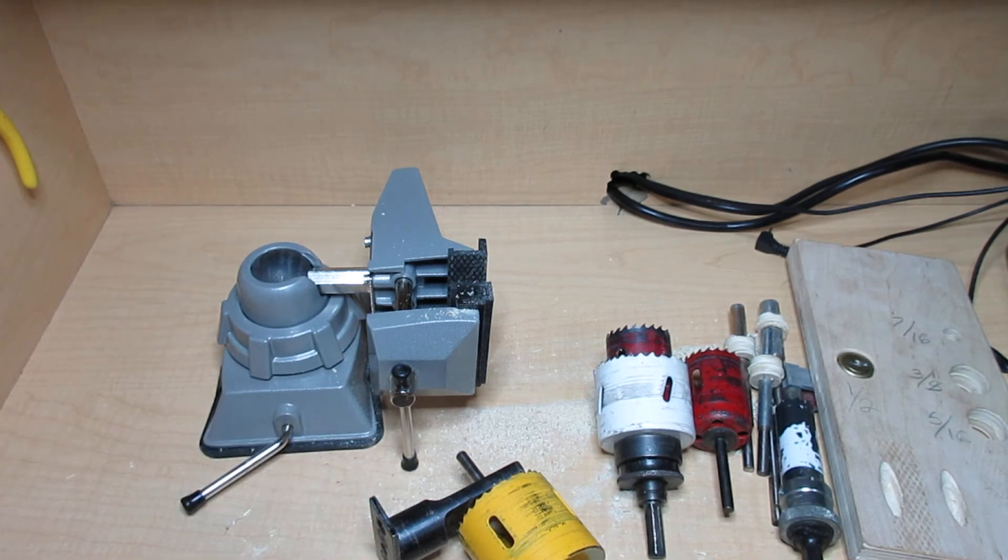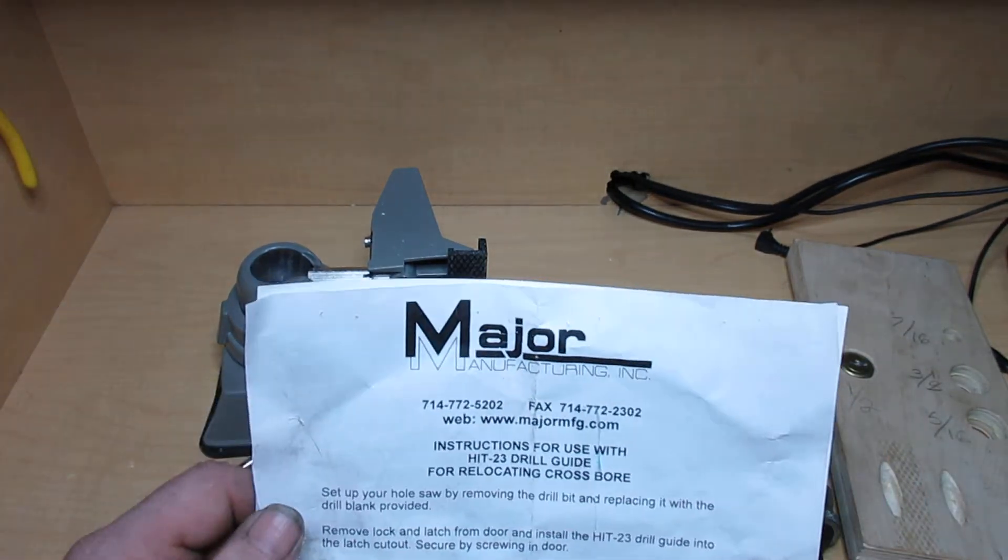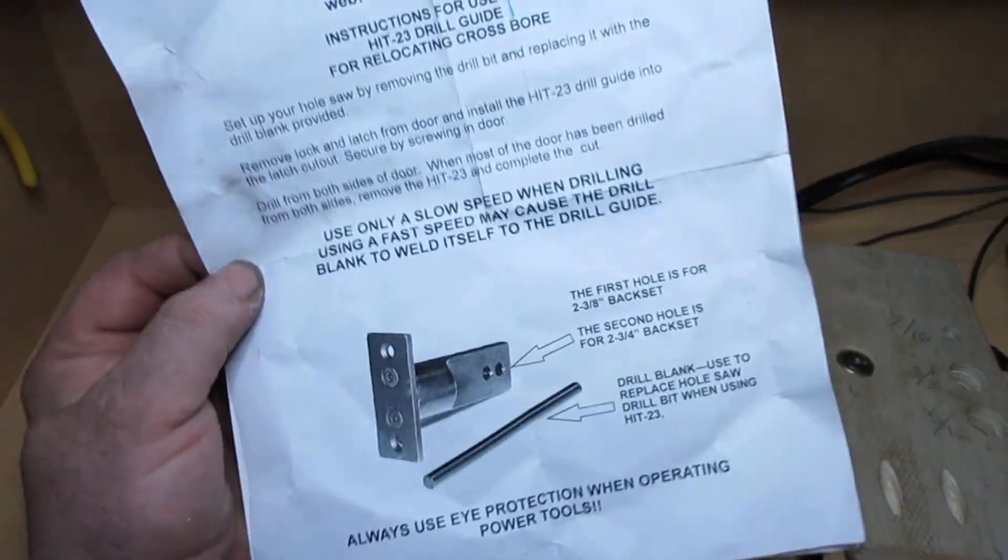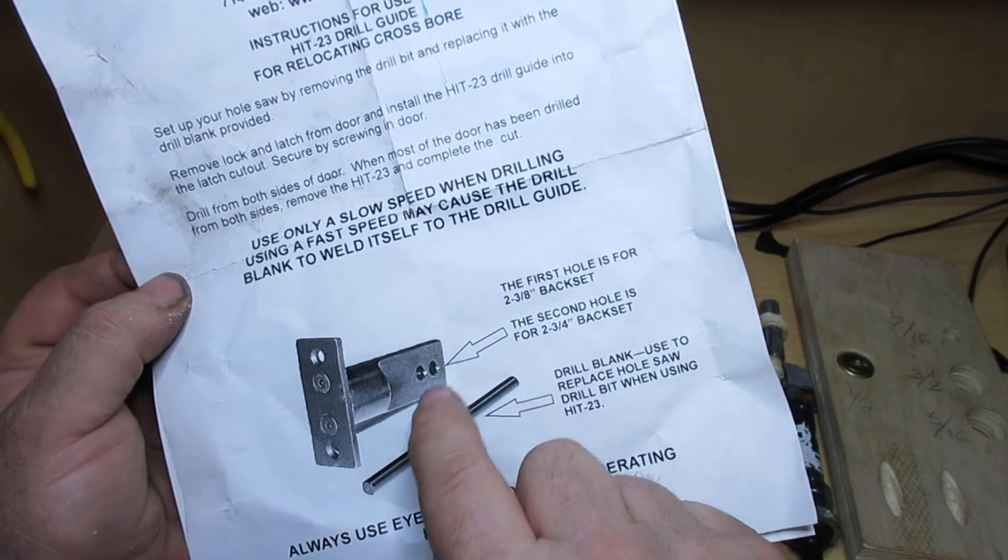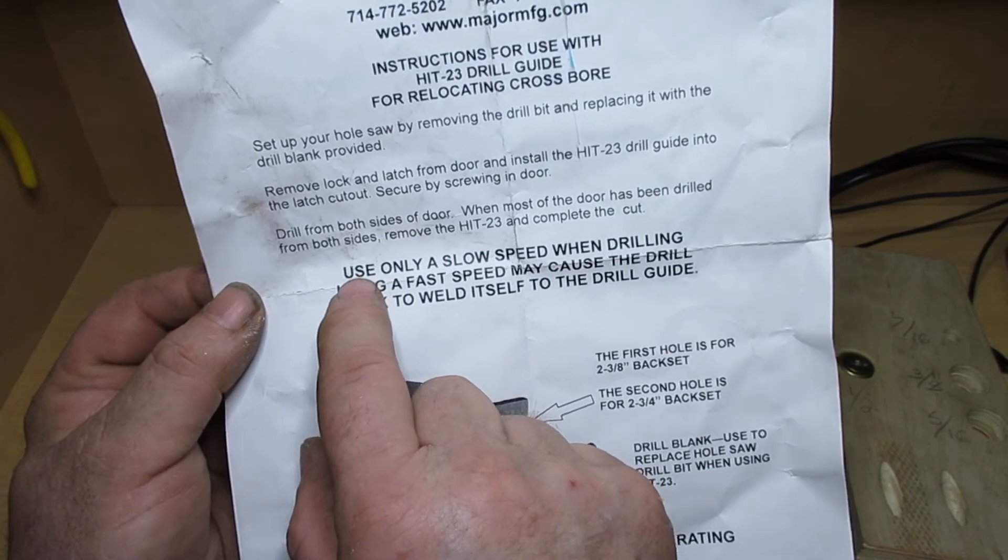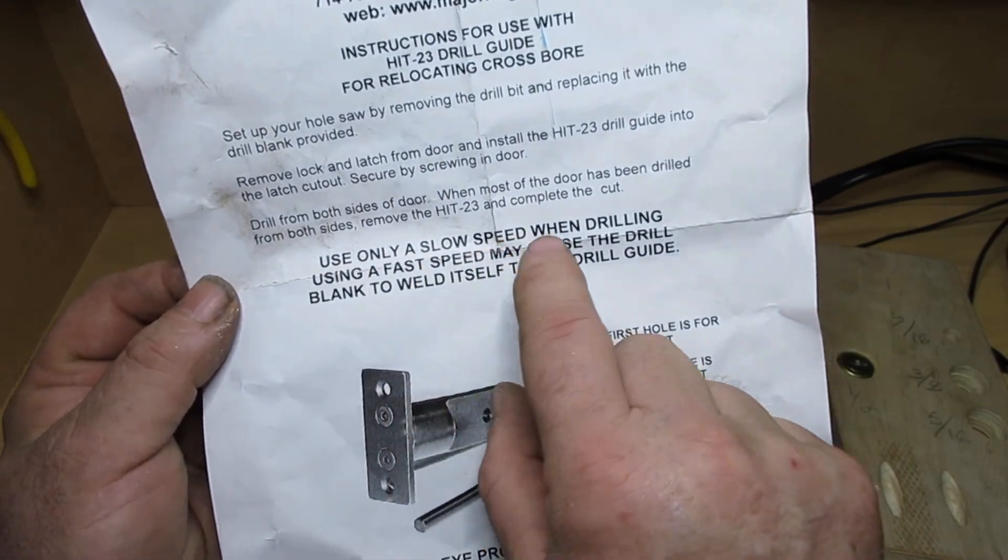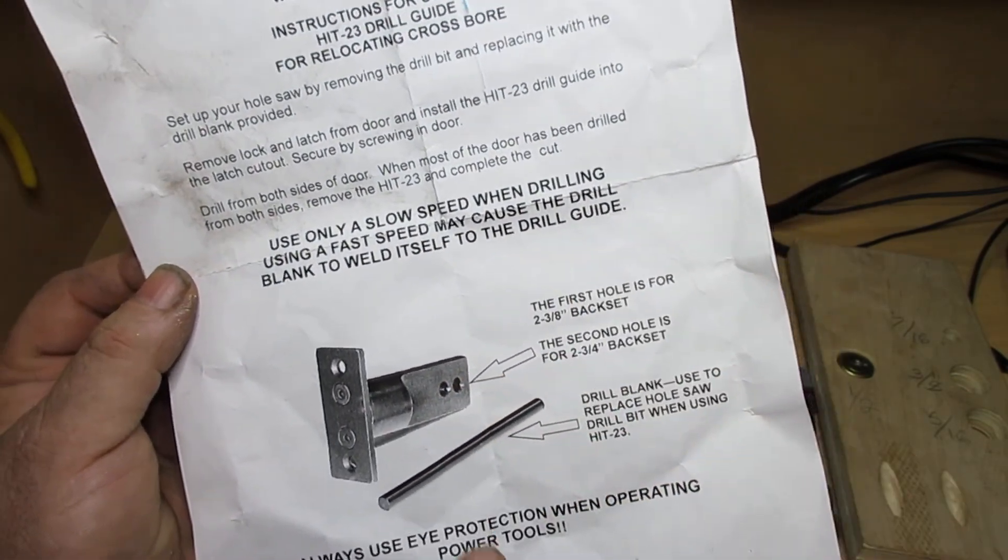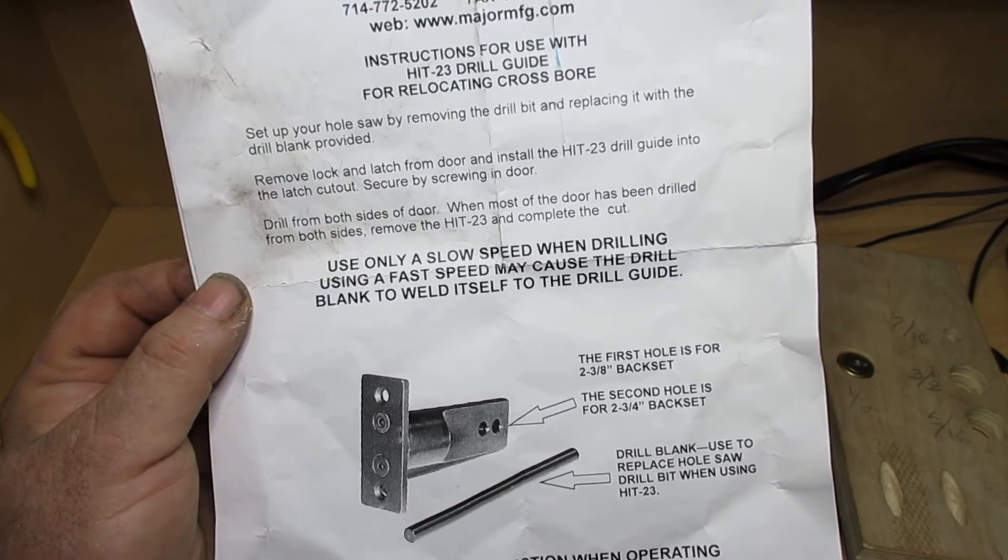Basically two of the technicians that I currently work with liked the system so much they went out and bought themselves one. And young Dan, who I've already mentioned in other videos, was using his and what happened was this guide pin here welded into the hole. And I have to say, Major MFG on the instructions warn you of this: use only a slow speed when drilling, using a fast speed may cause the drill blank to weld itself to the drill guide.